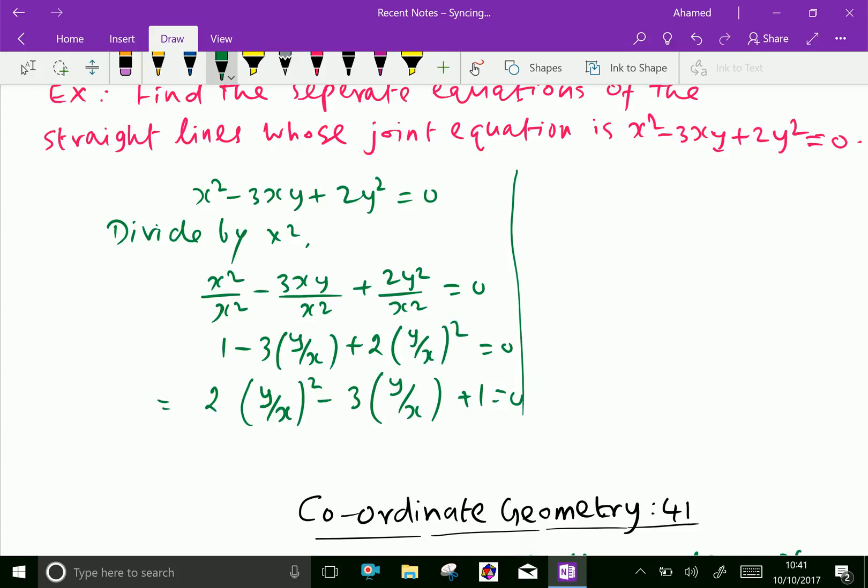Then we can substitute, put y over x equal to m, then we can write 2m squared minus 3m plus 1 equals 0.